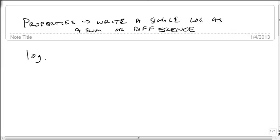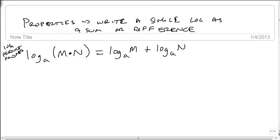If we have log base a of the quantity m times n, if I times the m and the n, then I can separate these outside into separate logarithms of log base a of m plus log base a of n. So this is the log product property. If I take the log of a product, then I can sum two separate logs.